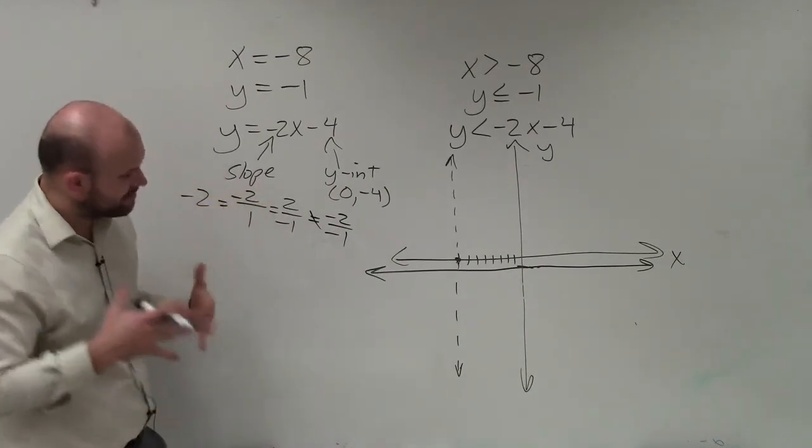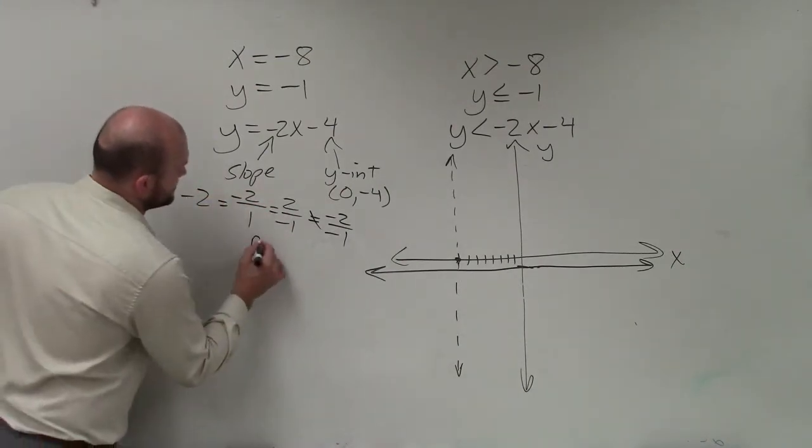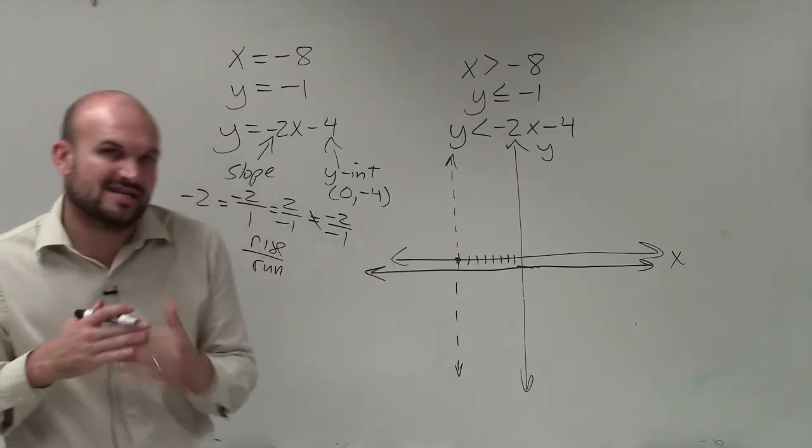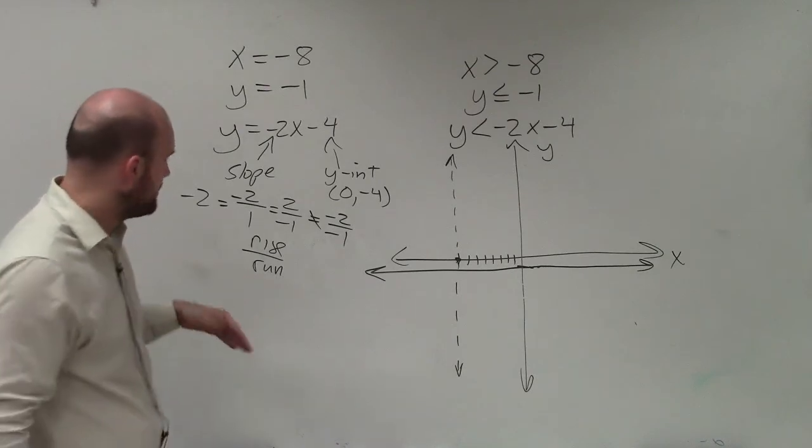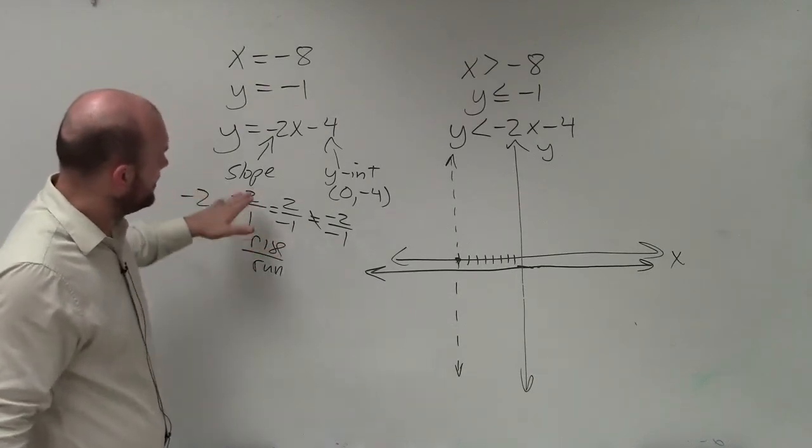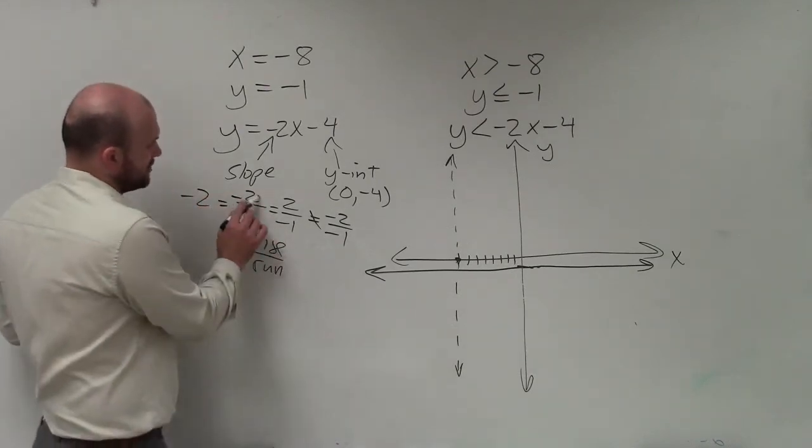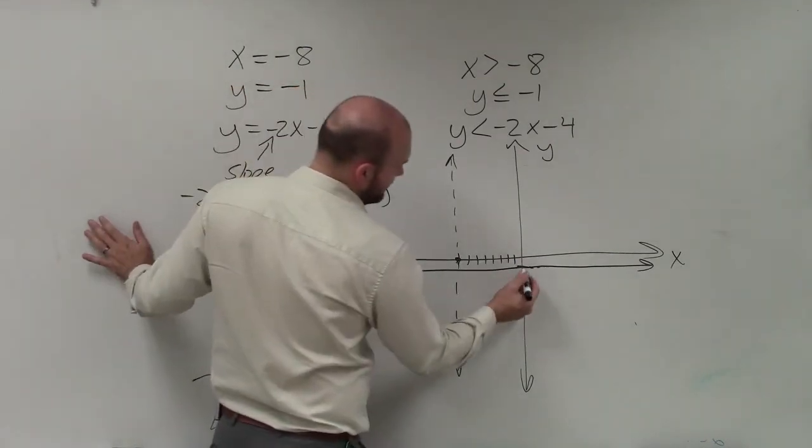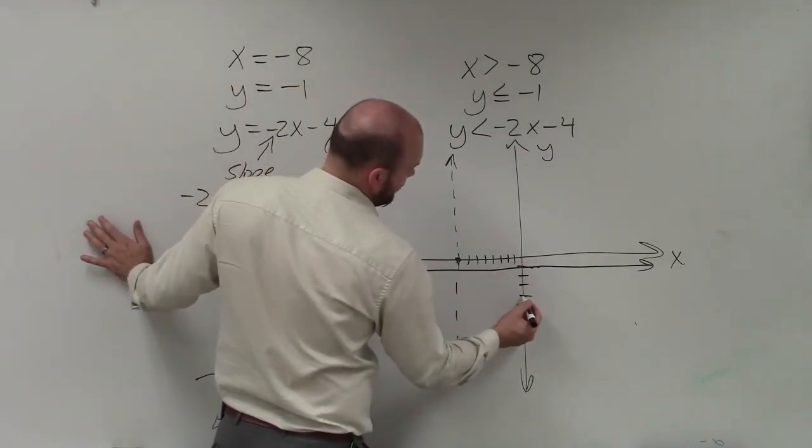So when you're doing this with the negative, because remember, slope is rise over run. Basically, the change in the y-coordinates over the change in the x-coordinates between any two points. Let's just work with the one I had up top. So the first thing I do is I plot my y-intercept, which is negative 4. So 1, 2, 3, 4.